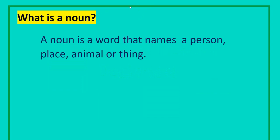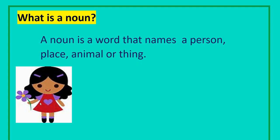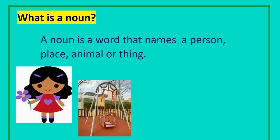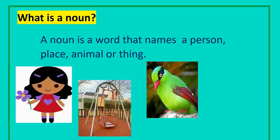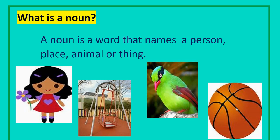A noun is a word that names a person, place, animal, or thing. So, this is an example of a person, a place, an animal, and a thing. Alright?